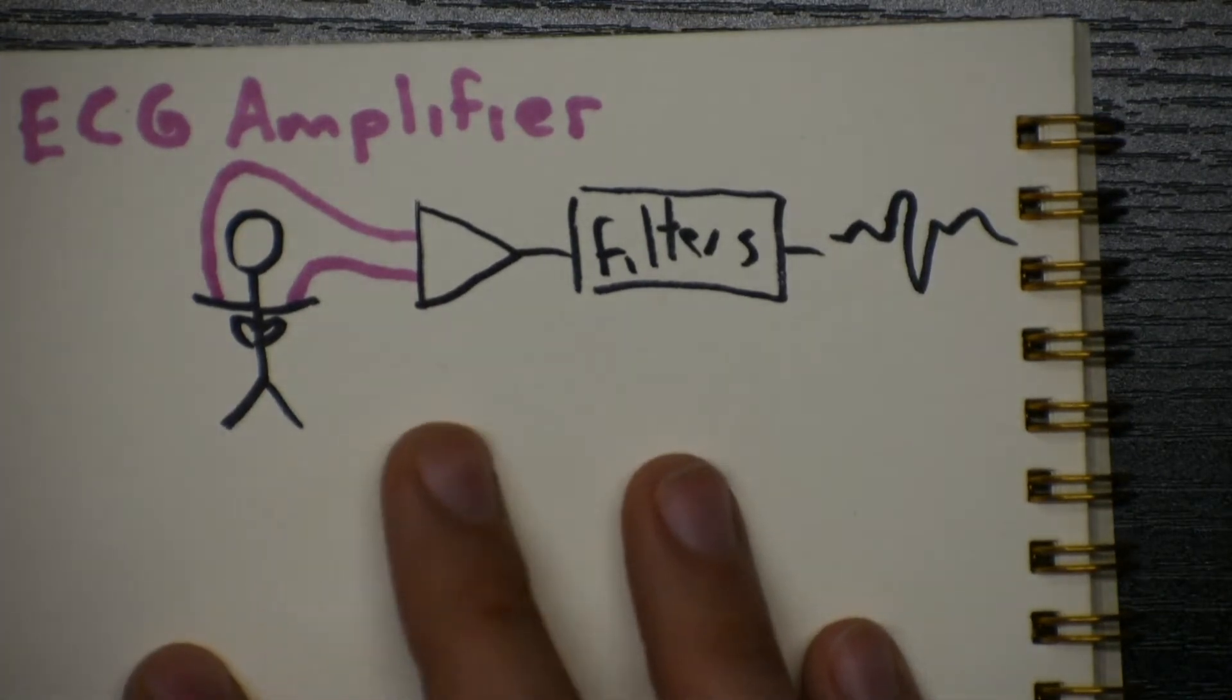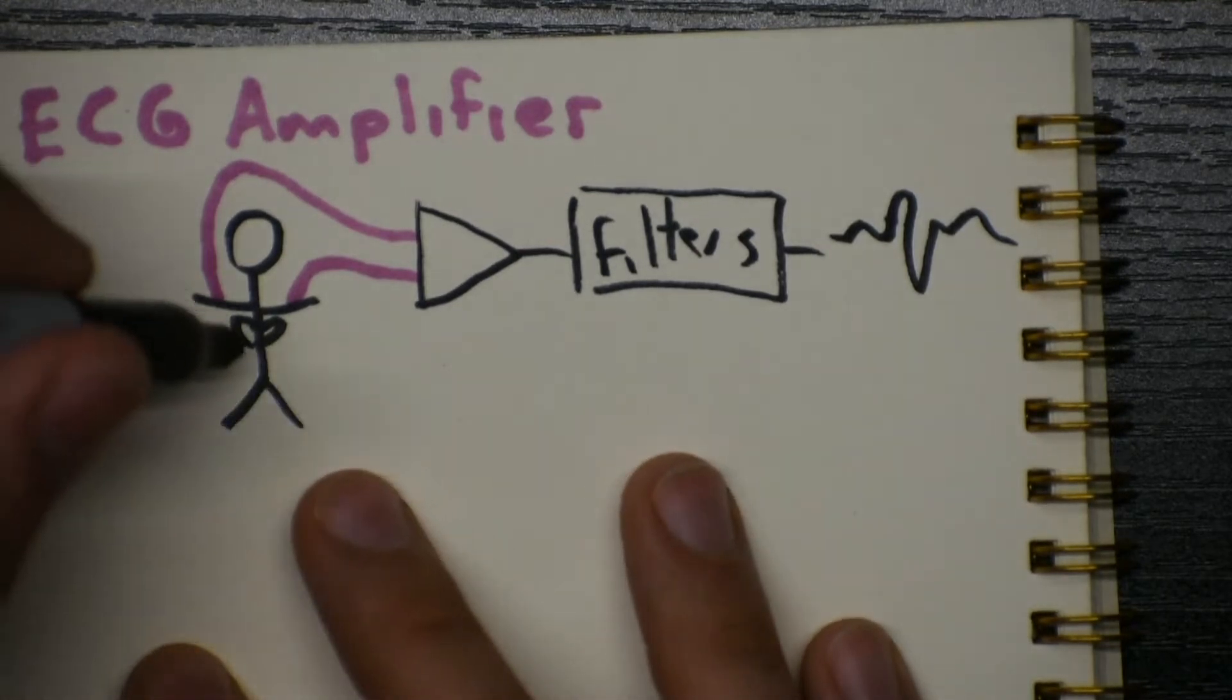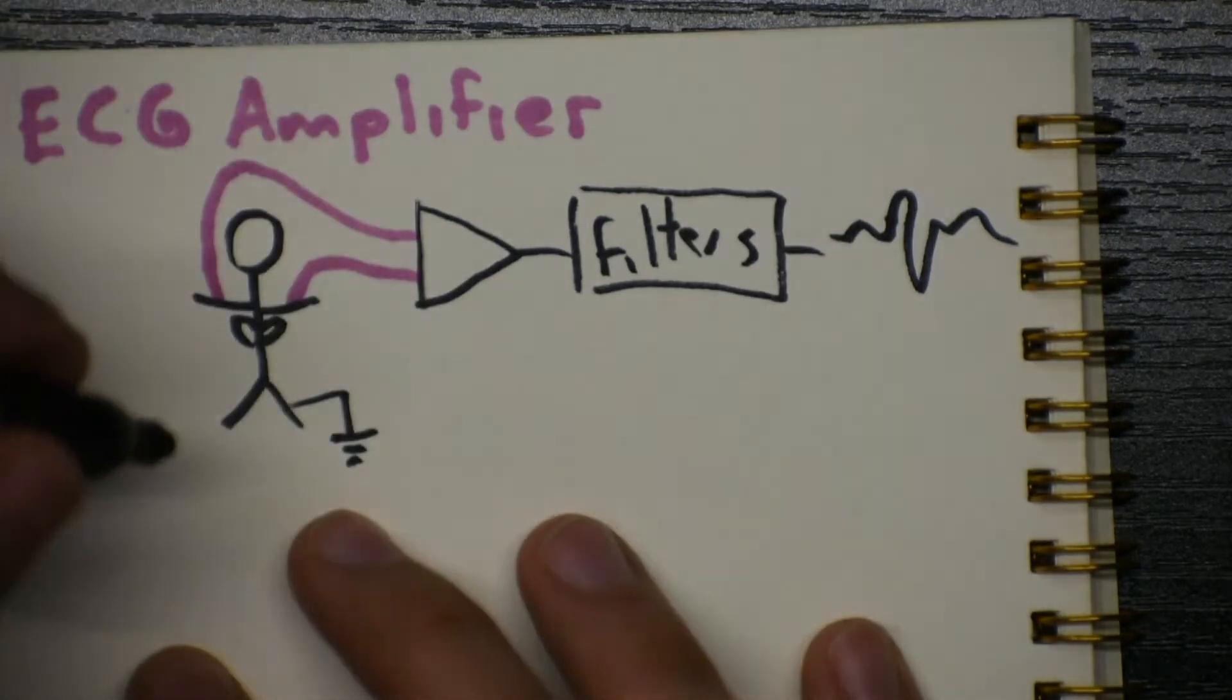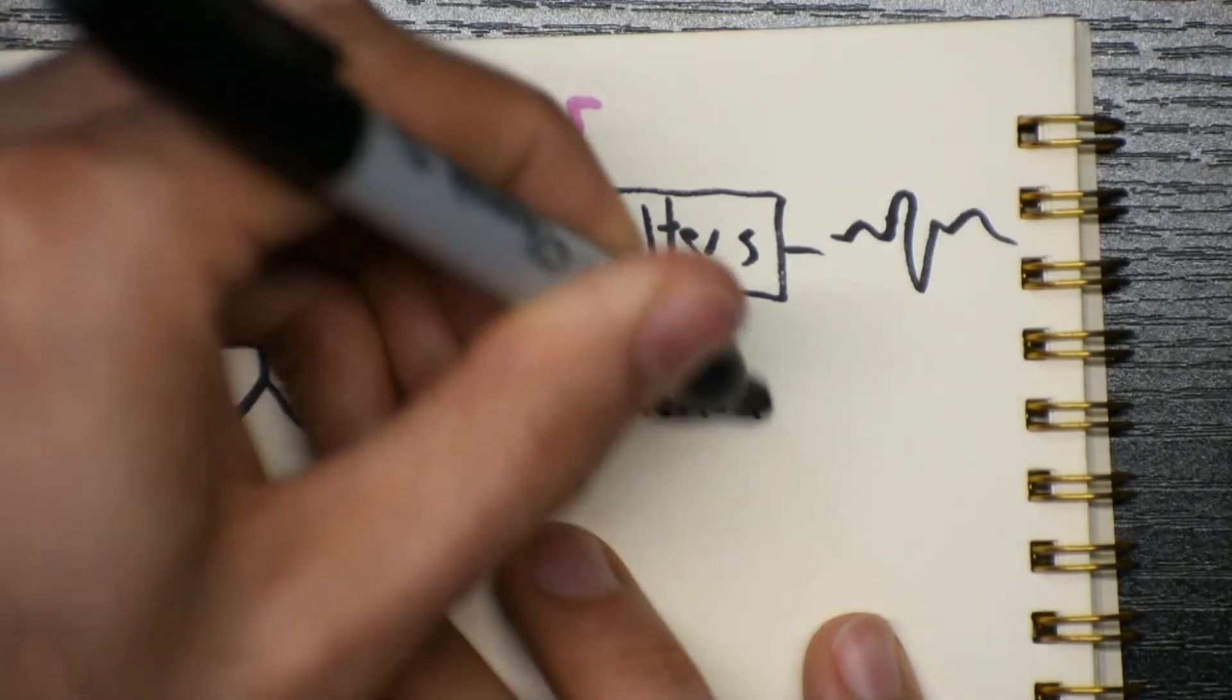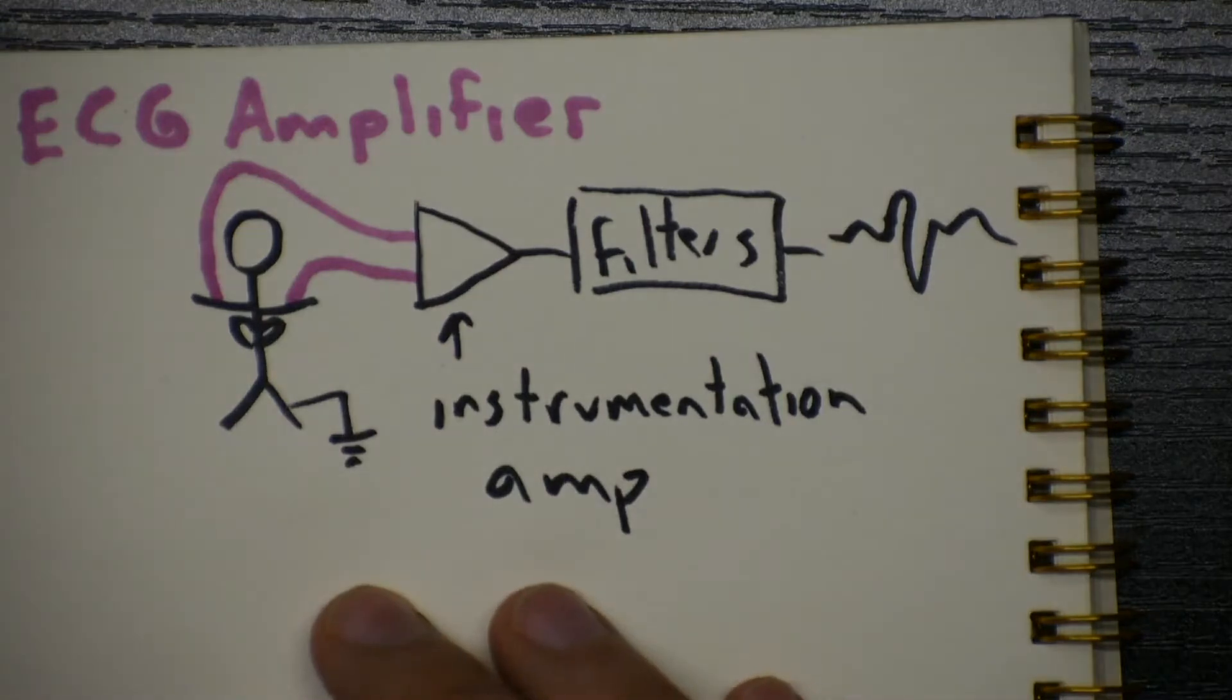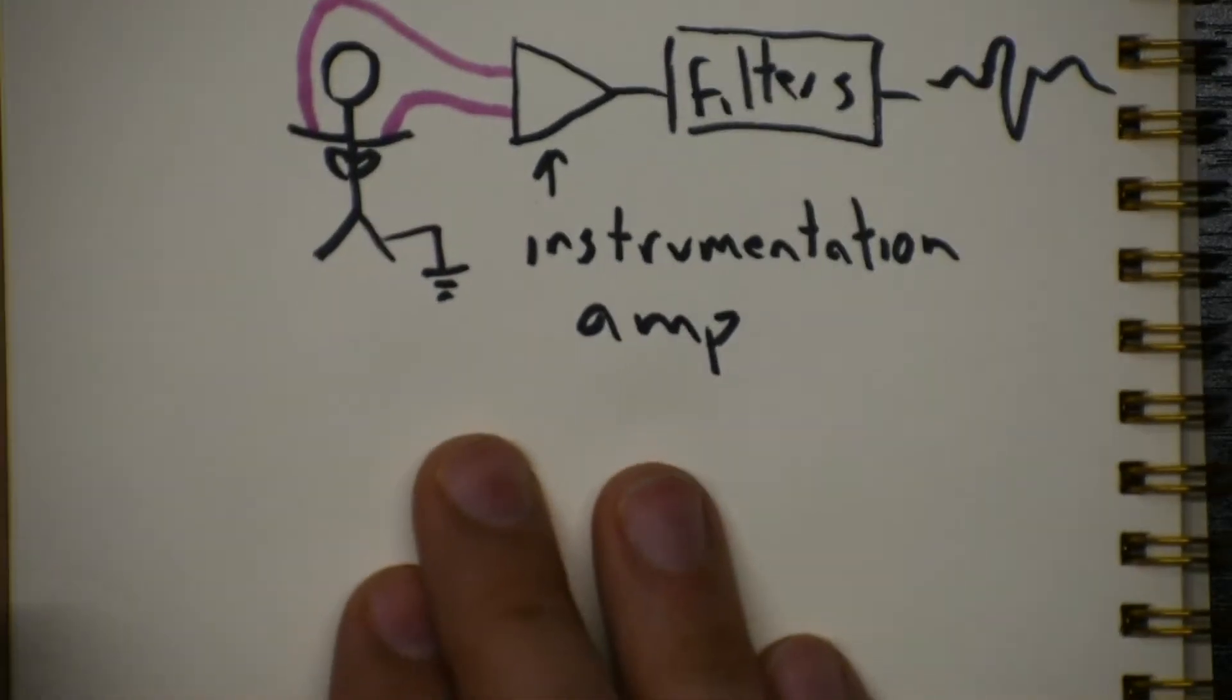One thing they don't really show here is that we need to be grounded in order to see the voltage. So we're going to talk about what that means. And we're going to use a specific kind of amplifier here. So the amplifier is going to be an instrumentation amplifier, which is of course just a set of op-amps, but it's usually easier to buy a chip that is an instrumentation amp instead of building one.